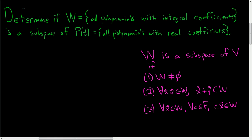We have a set W that consists of all polynomials with integral coefficients. That basically means all polynomials whose coefficients are integers, and we're being asked if this is a subspace of the vector space of all polynomials with real coefficients.